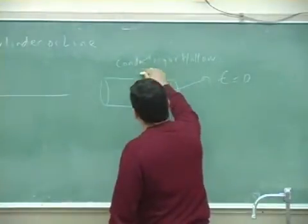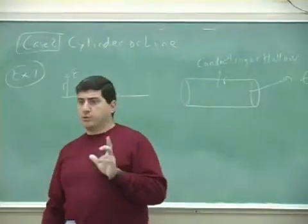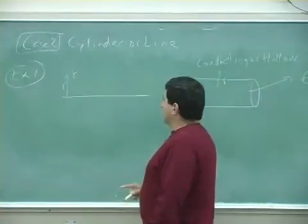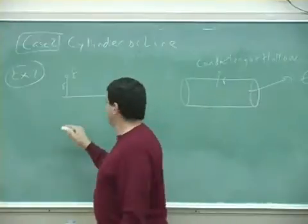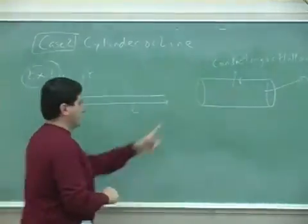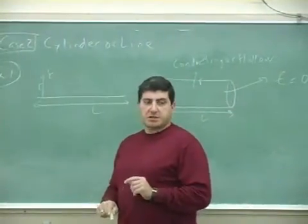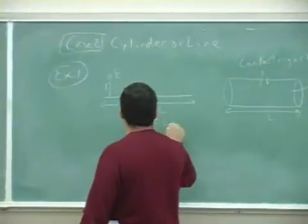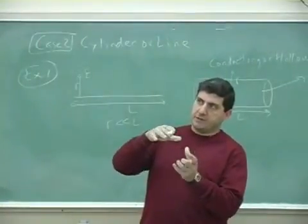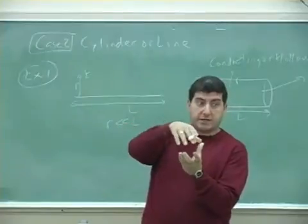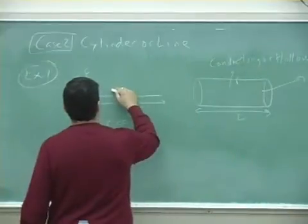How about the electric field outside at a certain distance R? Same as the line. Now, in order for Gauss's law to work for a line or a cylinder, R needs to be small compared to its size. The other way to say this is that we can find the electric field towards the middle of a cylinder, close to it, using Gauss's law.